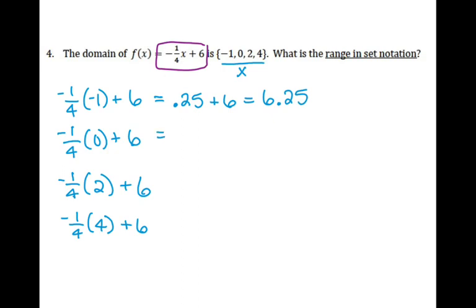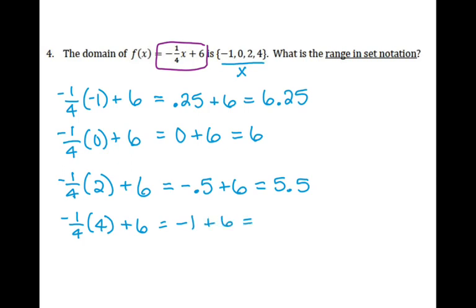Plugging in 2: (-1/4) times 2 is -1/2, or -0.5; plus 6 gives 5.5. Plugging in 4: (-1/4) times 4 is -1; plus 6 gives positive 5. Writing the range in set notation in numerical order, my lowest number was 5, followed by 5.5, 6, and 6.25.